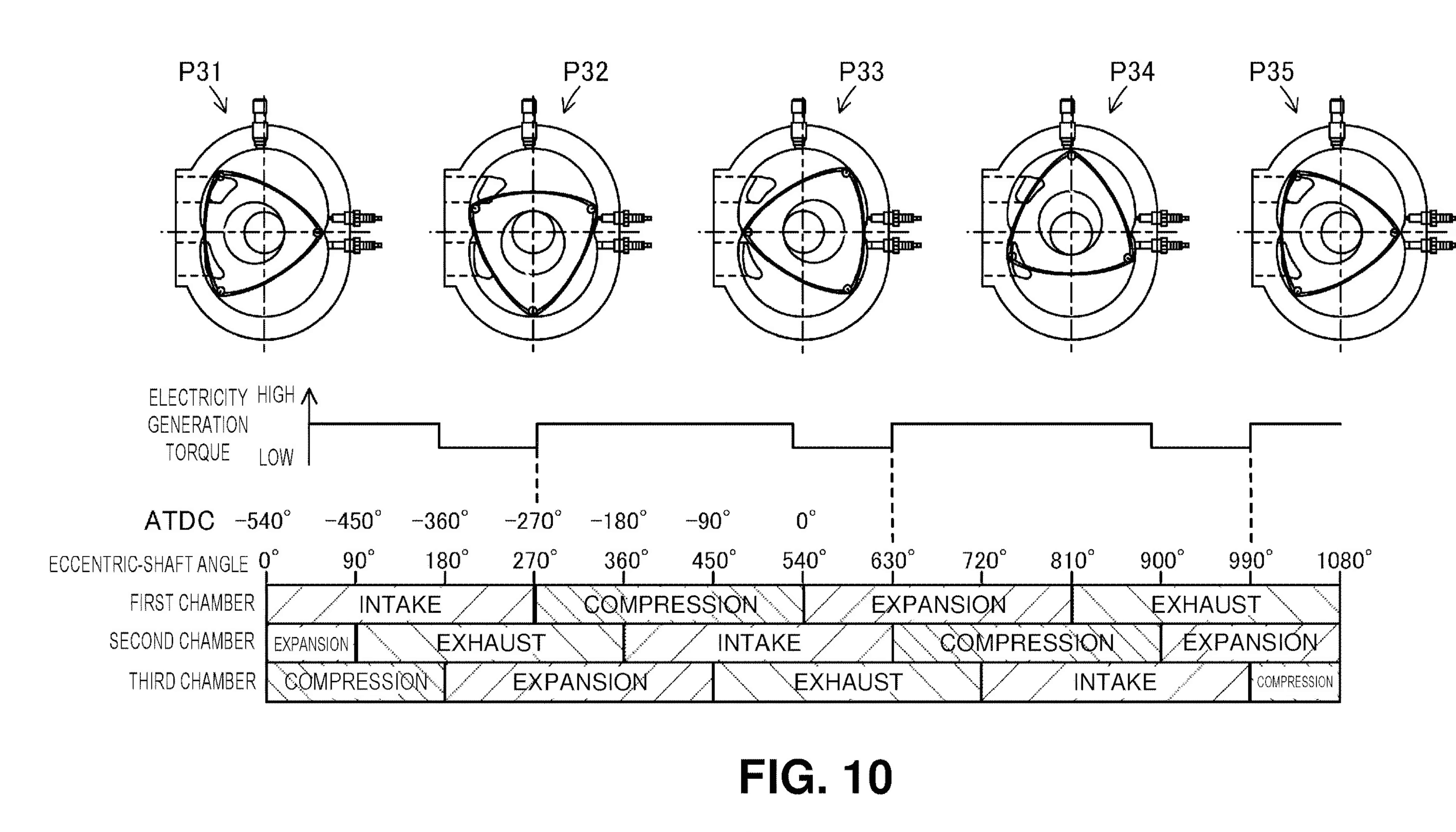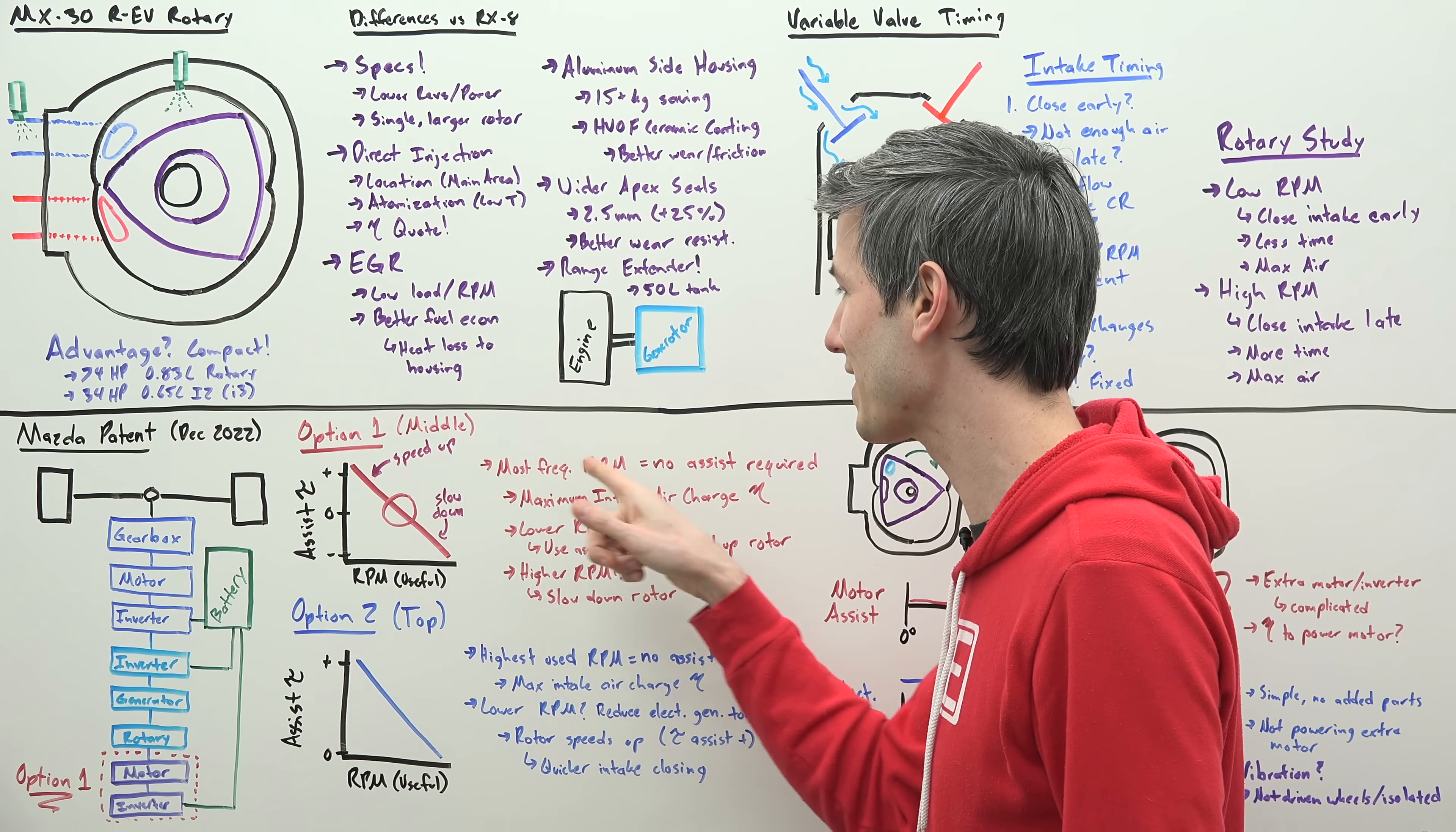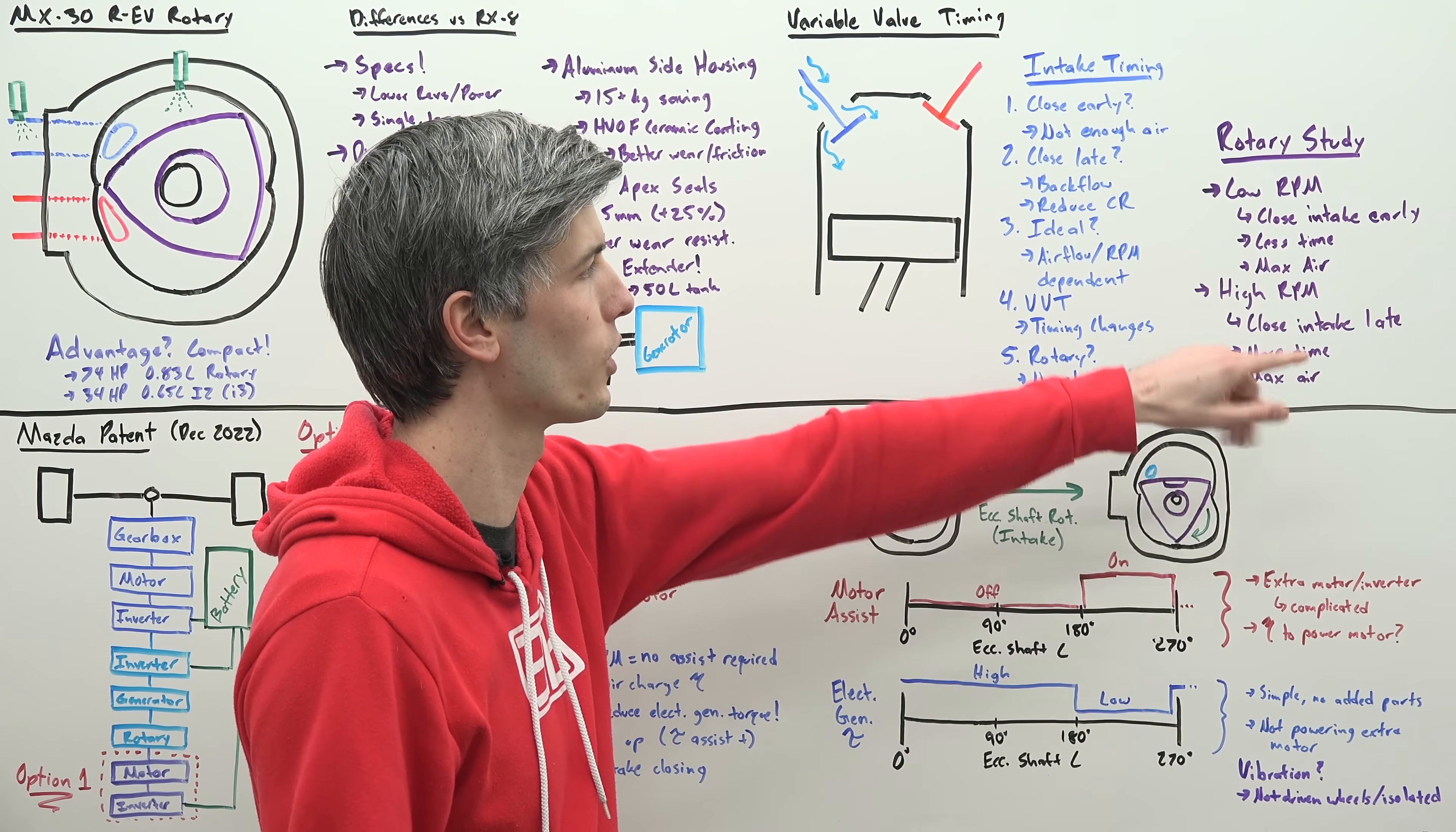Okay option two as described by the patent and this is extremely clever because instead of using this additional motor and inverter we're going to simply use the generator to do that job. Now one of the key differences here previously we designed an engine such that the most frequently used RPM gave us our maximum intake charge air efficiency so the overall design of the engine is designed for one specific RPM and at that specific RPM we have our maximum intake charge efficiency and thus we don't need to use any assist from the motor. Now our most efficient RPM for intake charge efficiency is the highest RPM we're going to use so in other words like the engine's red line the highest RPM we ever will use is going to be our maximum intake charge efficiency and then anything less than that we're going to have to provide some positive torque in order to speed up the rotation of the rotor in order to shorten the duration of that intake. Again we want the longest duration for our highest RPM.